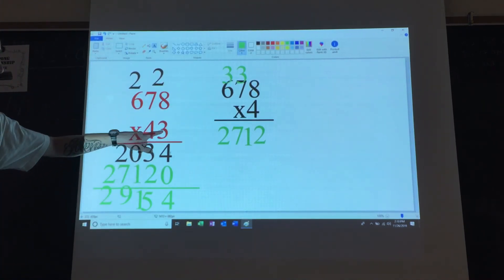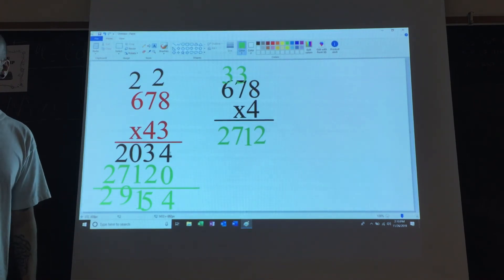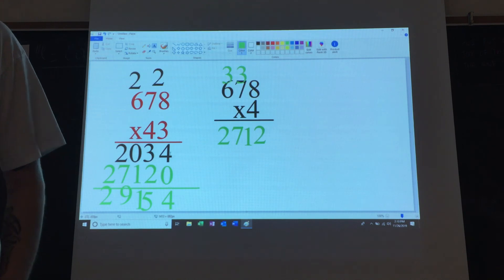So the answer to 678 times 43 is 29,154. All right, head out for recess.